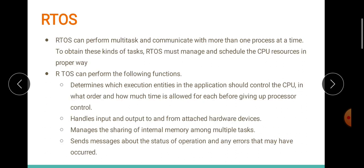RTOS can also perform multiple tasks and communicate between more than one process at a time. To obtain these kinds of tasks — multiple process communication and things — the RTOS must be able to manage and schedule the CPU resources in a proper way. Just like if you have two exams tomorrow, you must properly manage and schedule your time for both subjects and use your resources in a proper way so that you can do both tasks efficiently.